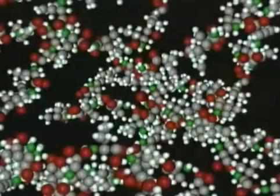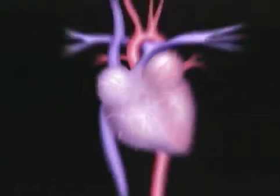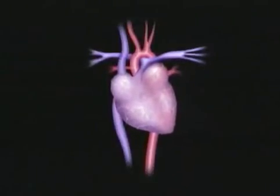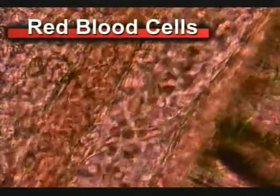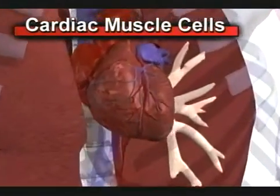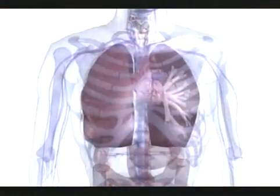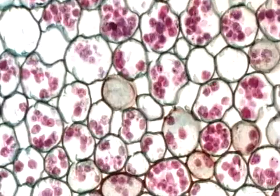The individual cell is a system unto itself, comprised of atoms and molecules which combine to form proteins and various organelles. In multicellular organisms, cells group together to form tissue, and tissues combine to form organs such as the heart. The heart has many different types of cells — red blood cells which transport oxygen, white blood cells which help fight disease, and cardiac muscle cells that help the heart contract and pump blood throughout the body.